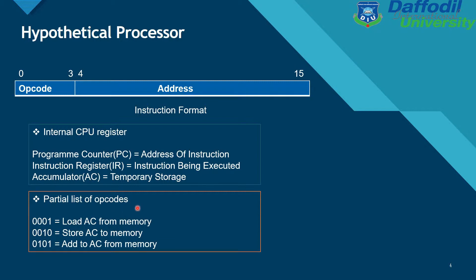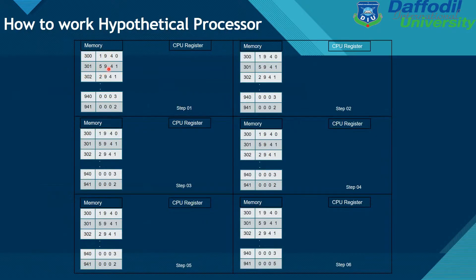Here is a partial list of op codes. Opcode 0001 represents 'Load AC from memory'. Opcode 0010 represents 'Store AC to memory'. Opcode 0101 represents 'Add to AC from memory'. These are displayed alongside some memory addresses and data values.